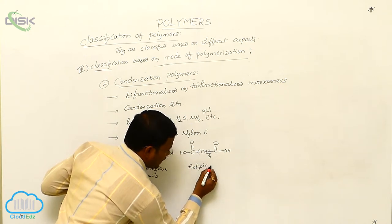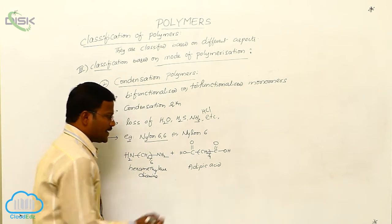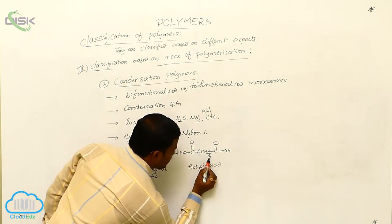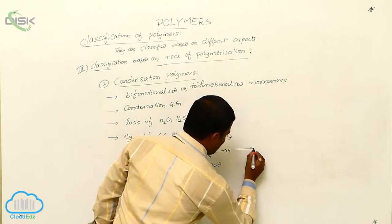What is adipic acid? A 6-carbon dicarboxylic acid is called adipic acid. 1 plus 4, 5 plus 1. Totally 6 carbons are present here.